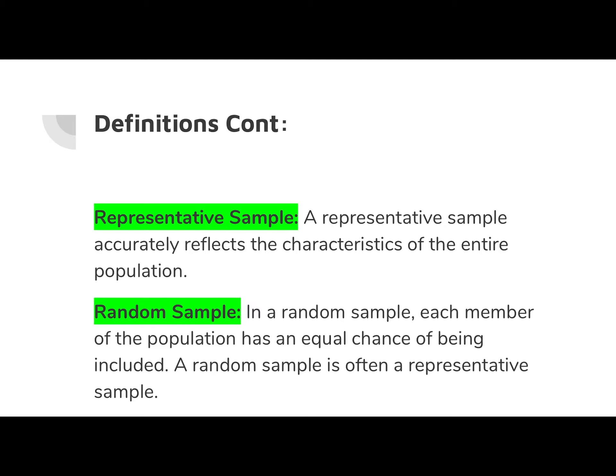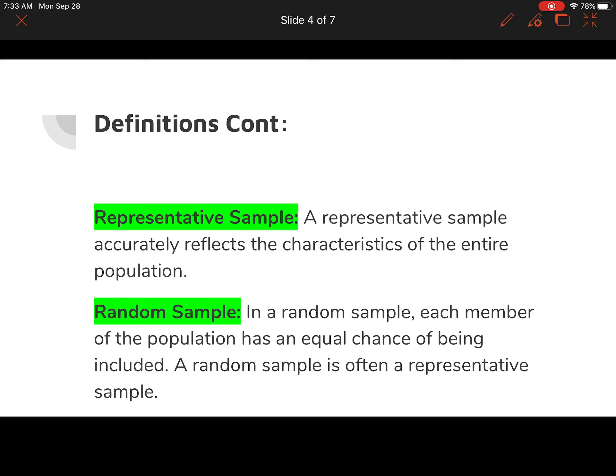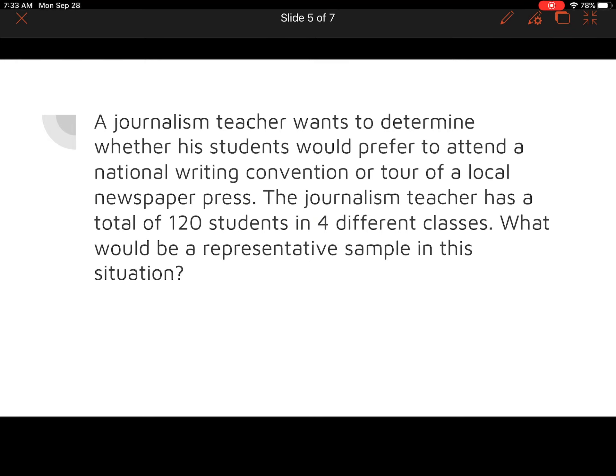We've got some more definitions. A representative sample accurately reflects the characteristics of the entire population. In a random sample, each member of the population has an equal chance of being included, and a random sample is often a representative sample. To take a representative sample, you have to meet all the characteristics that the population would have. The best way to do that is to just pick people at random — say you were at a football game, you could grab 10 people from the crowd and sample them.